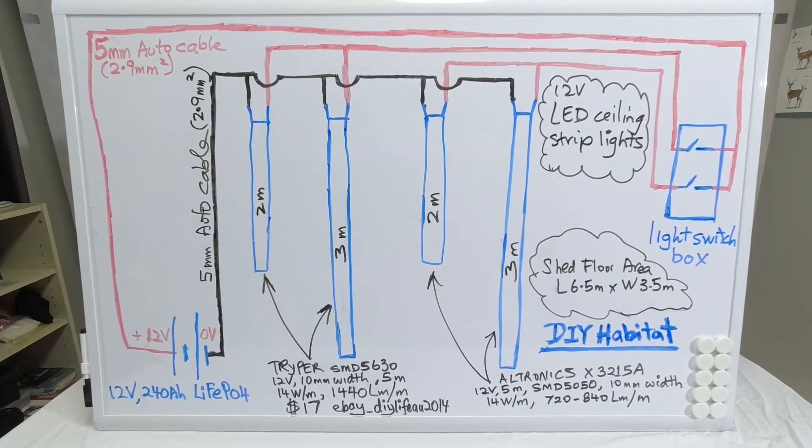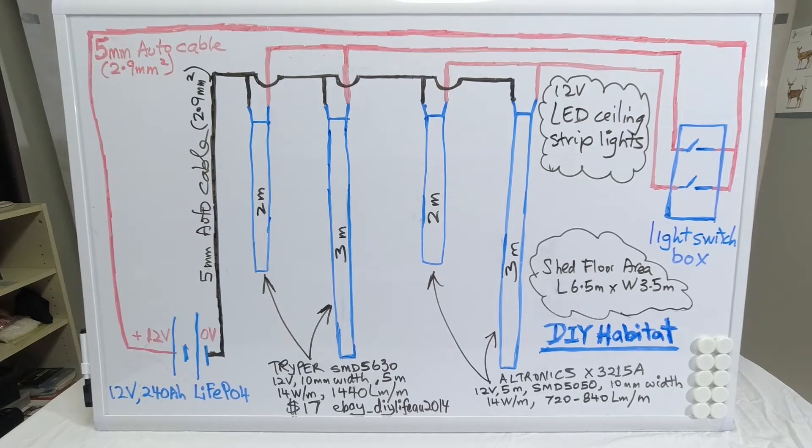Here is a high-level network schematic of the circuit in my shed. The shed has a floor area of 6.5 meters by 3.5 meters. We'll start with the light switch on the right-hand side.